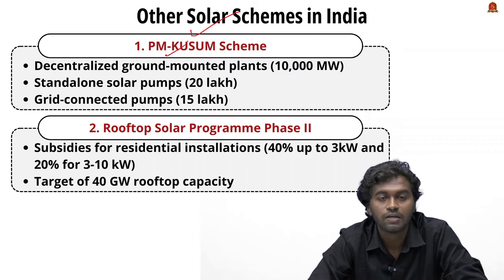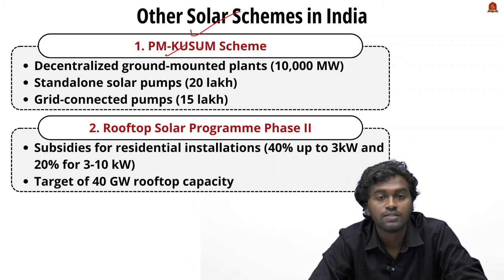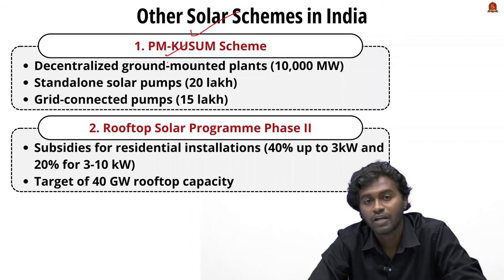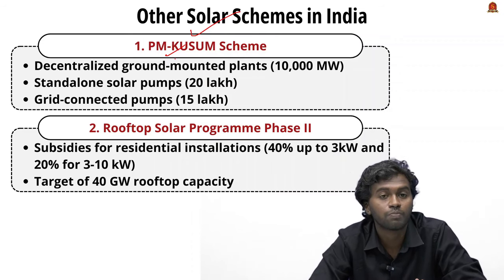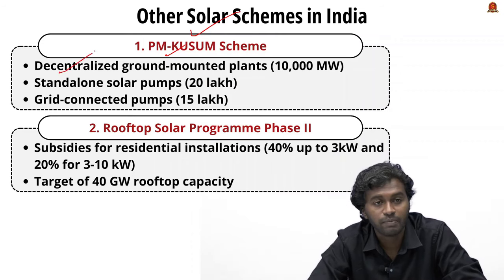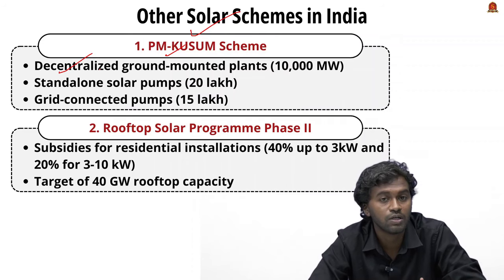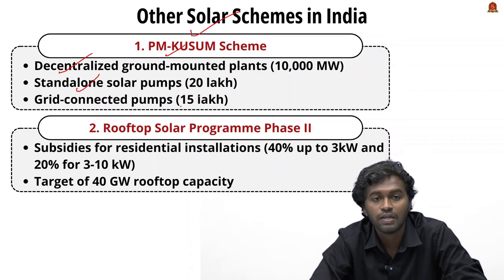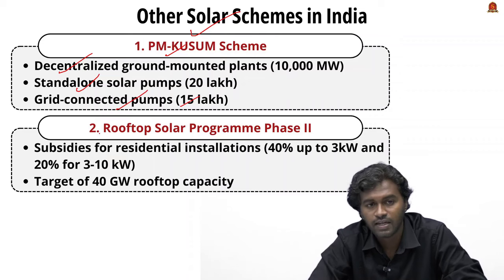Other major solar schemes in India include the Pradhan Mantri Kisan Urja Suraksha Evam Uthan Mahabhiyan, also known as the PM KUSUM scheme. It aims to provide financial and water security to farmers through solar technologies. The government plans to build 10,000 megawatt of decentralized ground-mounted grid-connected renewable power plants, install 20 lakh standalone solar pumps for agriculture, and solarize 15 lakh grid-connected pumps.